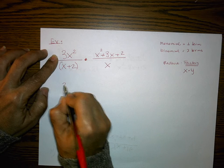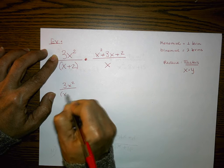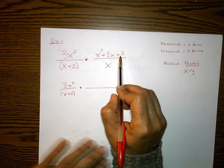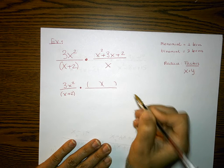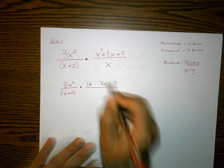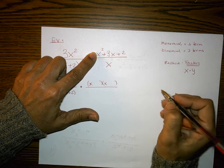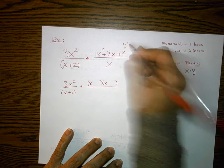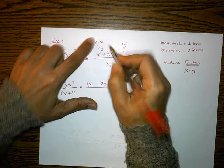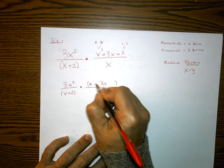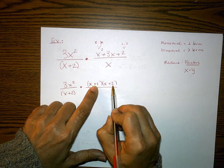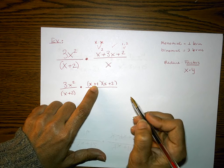The first fraction, 3x²/(x+2), has nothing to reduce, so I leave it as is. Over here, we have a trinomial — x²+3x+2 — which we can definitely factor. Using guess and check: x times x gives x², and two values that multiply to 2 and add to 3 are 1 and 2. So 1 times 2 gives the constant and 1 plus 2 gives the middle term. The trinomial factors as (x+1)(x+2).